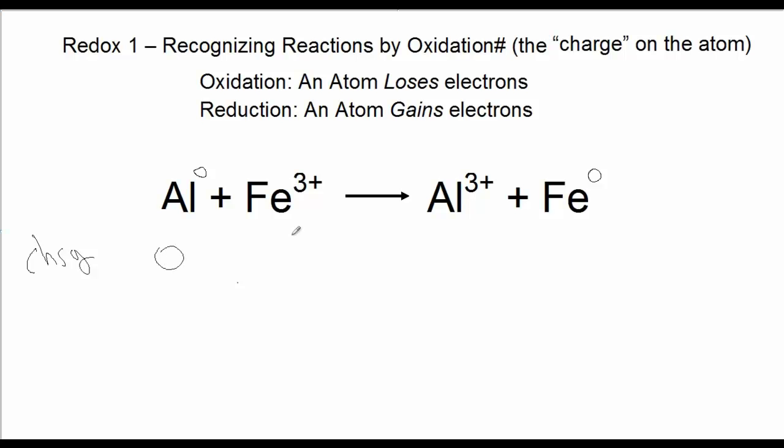Now to determine if this is a redox reaction, examine the atoms and their charges. Well, on the left side here, aluminum is zero. On the right side, aluminum is positive 3. So what must have occurred for aluminum to become a positive 3?